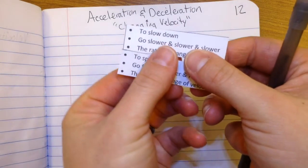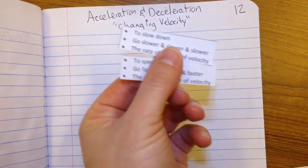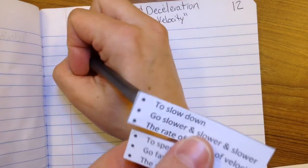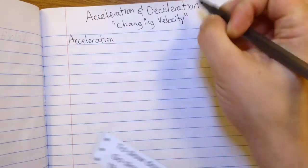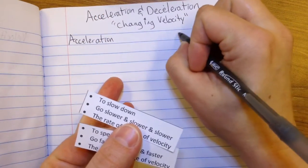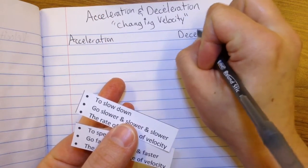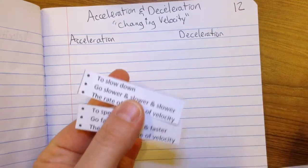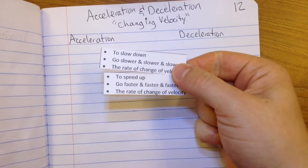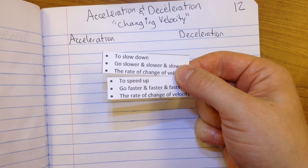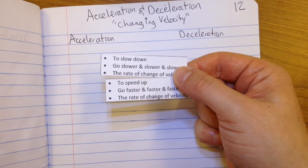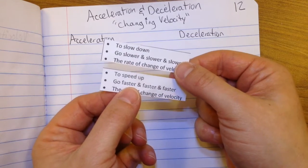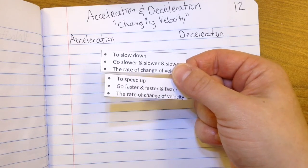Find the two pieces of paper that have bullet notes on them. Look those over and read them. At the top of your page, on the left, write acceleration. On the right, deceleration. And figure out which one's which — which bullet points describe acceleration, which bullet points describe deceleration?